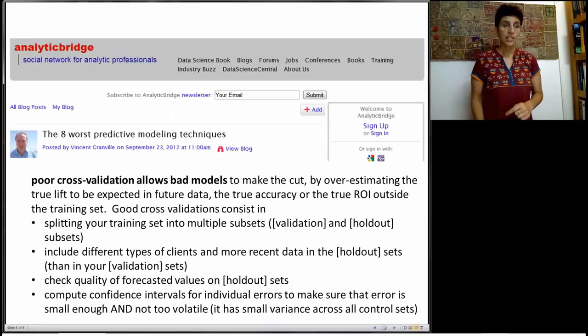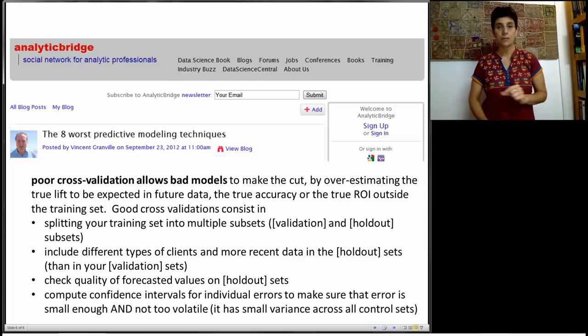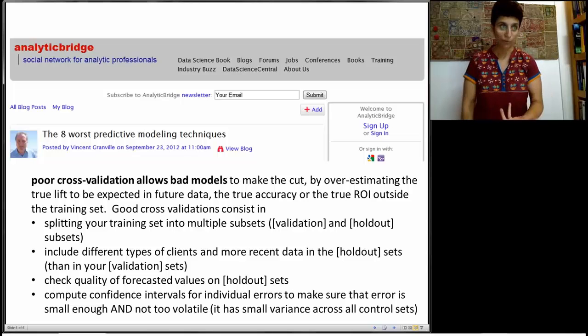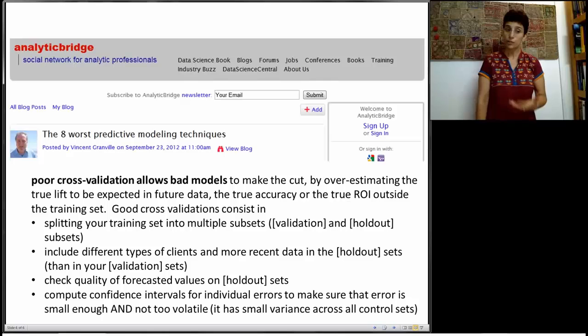There's an interesting blog post that came recently on Analytics Bridge, where the author talks about a few different data mining issues, and in particular he talks about one reason that data mining projects fail, and that is poor cross-validation. Poor cross-validation allows bad models to make the cut by overestimating the true lift, or performance, to be expected in future data. The true accuracy, or the true ROI outside the training set.